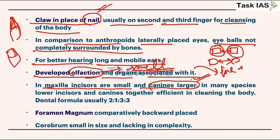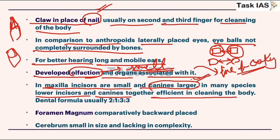They don't have the capability to use fire for cooking, and bipedalism is lacking in many species. Lower incisors and canines together are efficient in cleaning the body. Sometimes you have noticed that primates use their mouth and teeth for some kind of itching or cleaning their body — these kind of features are also observed here.